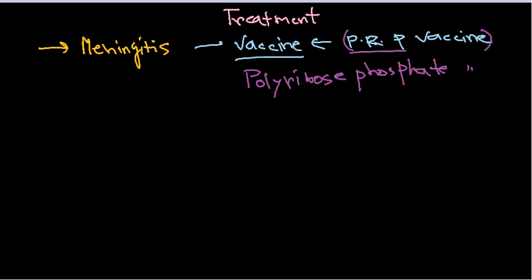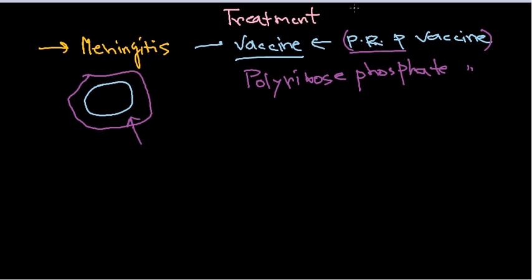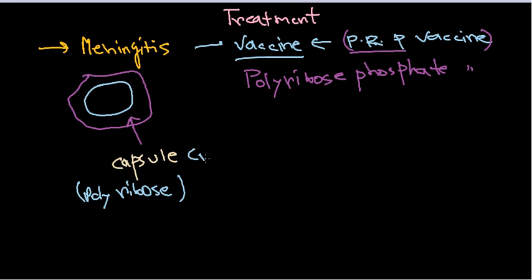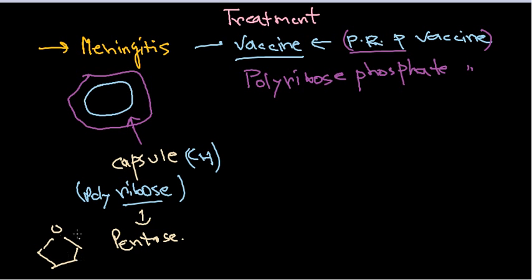If you remember the structure of Haemophilus influenzae, there is a bacterial amorphous structure with a capsular coat outside. This capsule is made up of poly ribose sugar — carbohydrates, but specifically ribose, which is a pentose type of sugar with a five-carbon ring structure, also present in DNA and RNA. Poly ribose means many ribose units attached together to make this capsular structure.